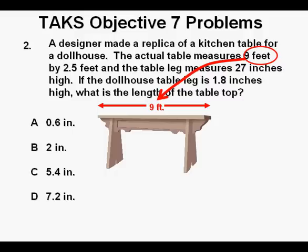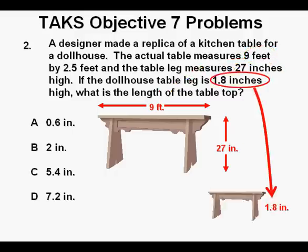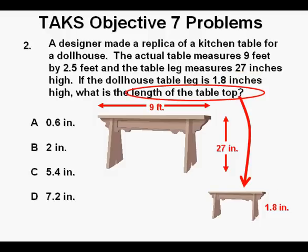Its length is 9 feet, and the table leg measures 27 inches. And then we have the replica table with a table leg length of 1.8 inches. And we need to find the length of the table top for the dollhouse replica. So this is really just a proportion problem.